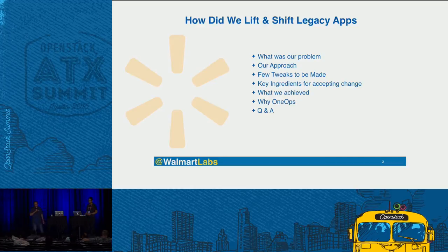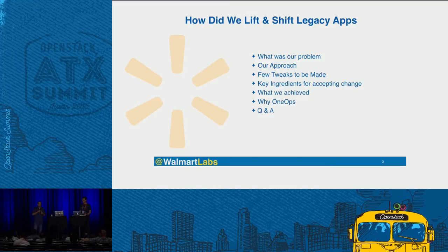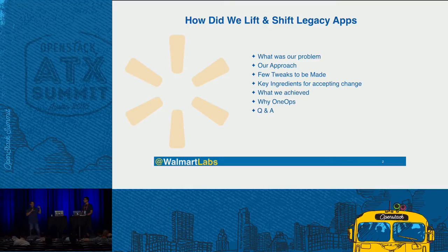These are the topics we are going to cover today: the problem we encountered, challenges we had, our approach, and how you can lift and shift applications by making just a few tweaks. We didn't want to rewrite apps — there had to be the fewest possible changes to move them to the cloud. We'll also cover key ingredients for accepting change, what we achieved, why we used OneOps, and then Q&A at the end.